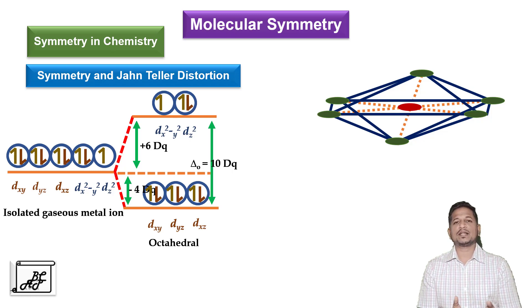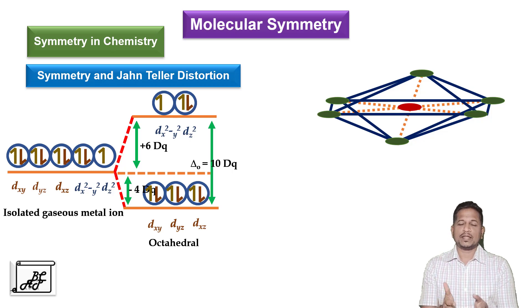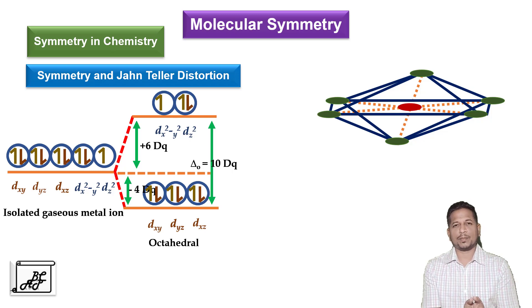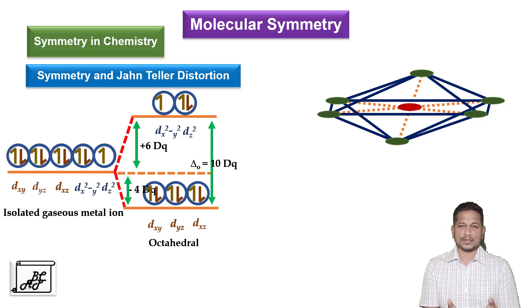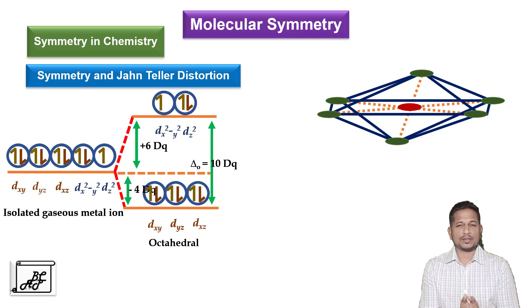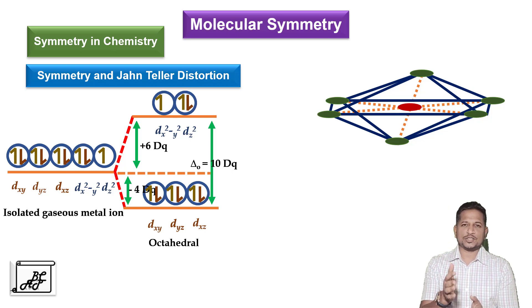In both cases, there is uneven distribution of electrons. For example, the last electron if it enters into dz square, we get two long bonds and if it enters into dx square minus y square orbital, we get four long bonds. So that is the importance of molecular symmetry in understanding the structure of molecule.